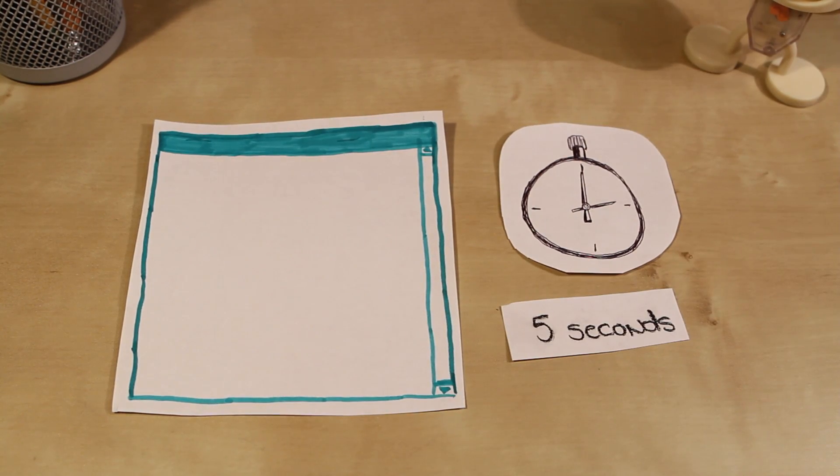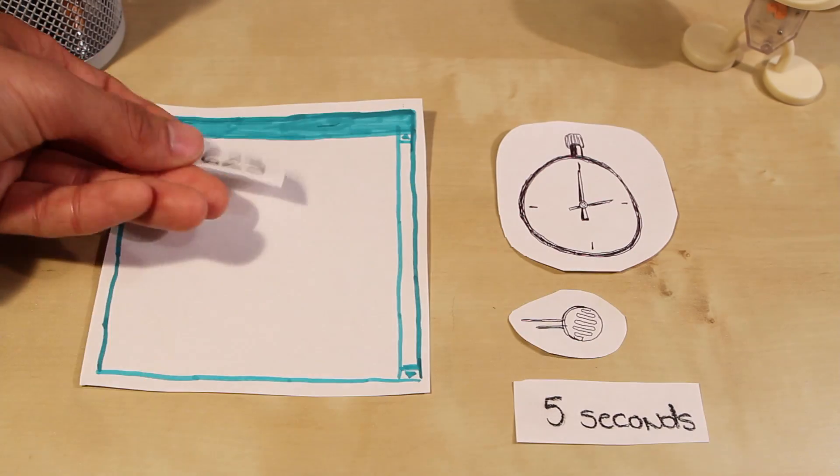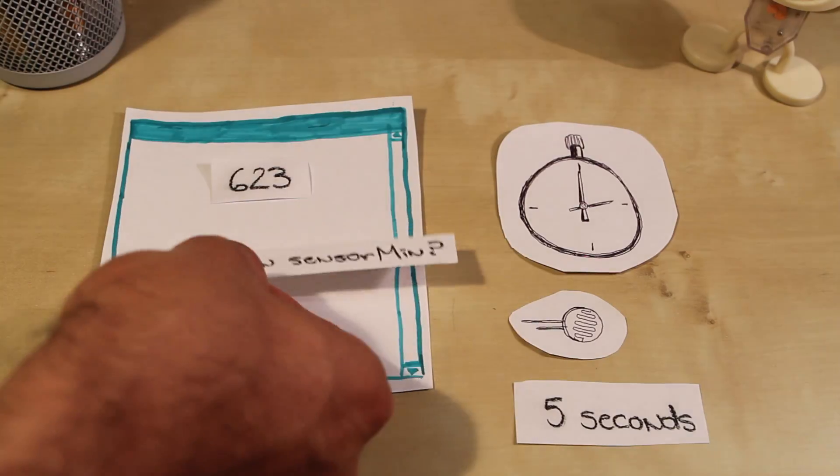For the next five seconds, we'll be testing against these two variables. We read from the sensor and then ask the Arduino, is this the biggest number you've seen? Or is this the smallest number you've seen?